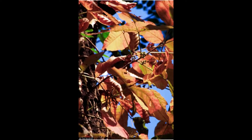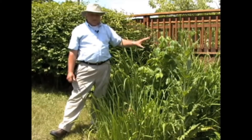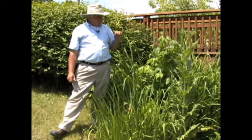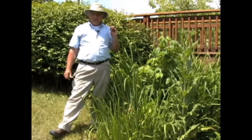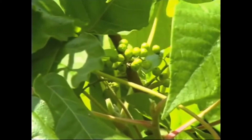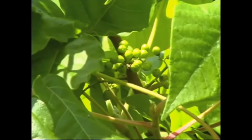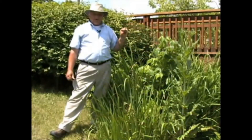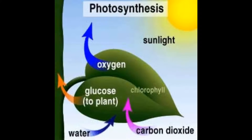Extension horticulturist Greg Stack explains: this is poison ivy. In the spring and the summer, it's extremely vigorous, with a nice green color. It has small white flowers in the springtime, followed by white berries. In the fall, this can be kind of a reddish orange — quite attractive.